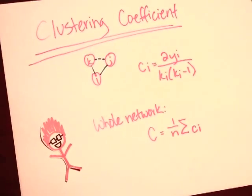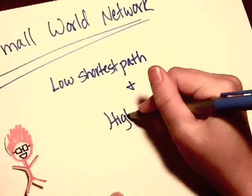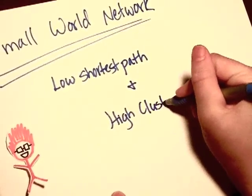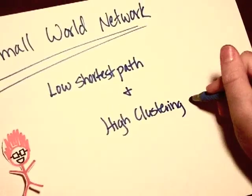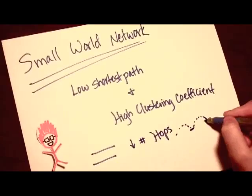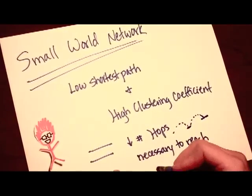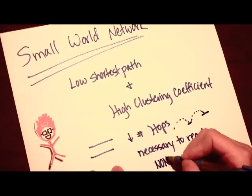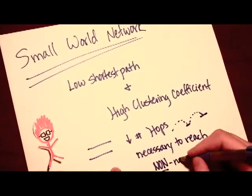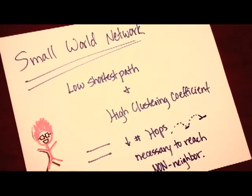The last definition you want to know is the small world network. In this network, the shortest path is low and the clustering coefficient is high. Humans are said to function best in this network. When the number of nodes is high and the network is sparse, it is easy for someone to jump to their desired destination using low numbers of hops.